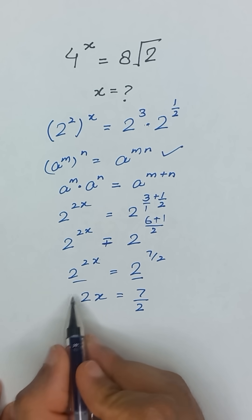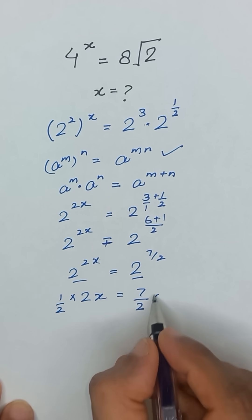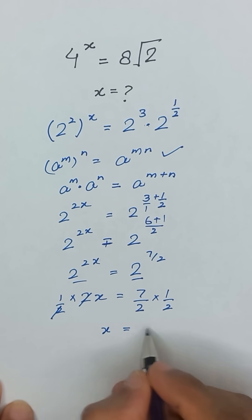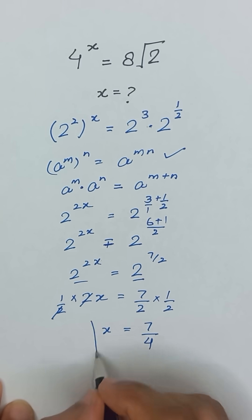Now to remove this 2, we will multiply 1 divided by 2 on both sides. This 2 and 2 will cancel out, and x will equal 7 divided by 4.